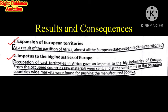First consequence: Expansion of European Territories. As a result of the partition of Africa, almost all European states expanded their territories by making colonies, which increased their territory. Second consequence: Impetus to the Big Industries of Europe. Occupation of vast territories in Africa gave impetus to the big industries of Europe. Raw materials from occupied countries were sent to their industries, and wide markets were found in the occupied countries for selling manufactured goods.